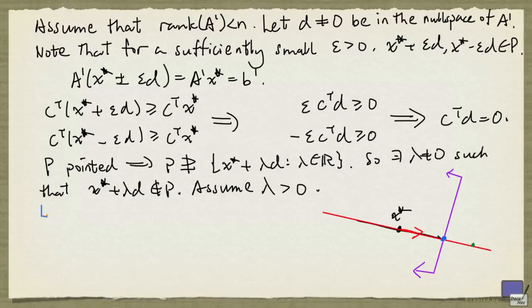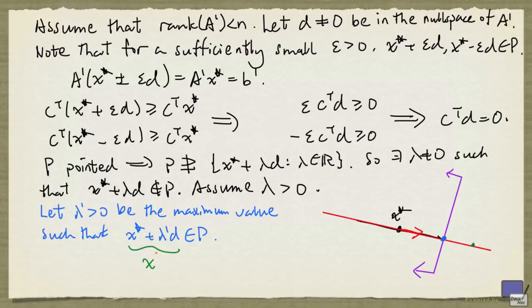So we are going to let λ' > 0 be the maximum value such that x* + λ'd is in P. So for any value bigger than λ', we'll be out of P. Now call this point x'.